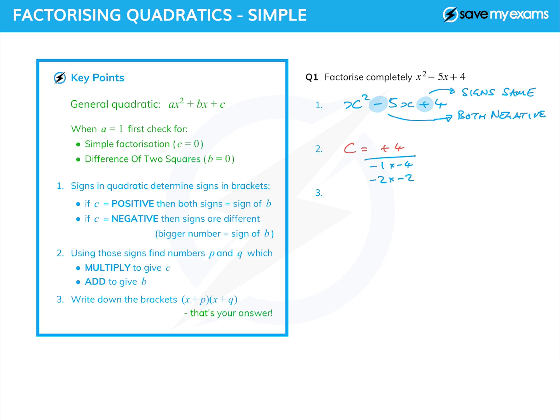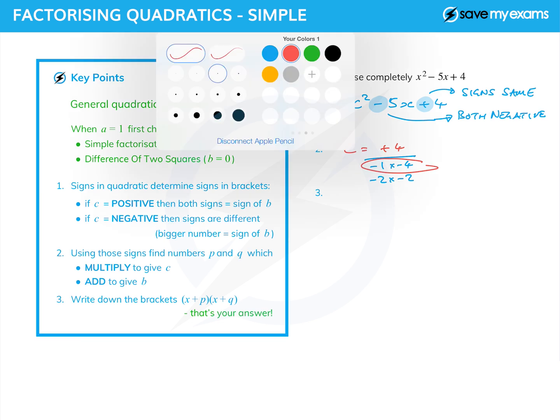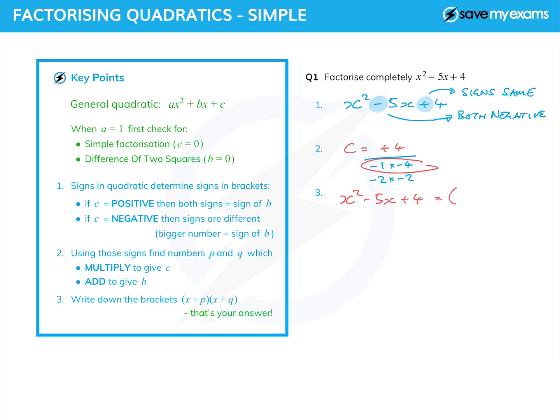We just look to see which add together to give -5, and it is those two (-1 and -4) which add together to give -5. So we can simply write down our answer: x² - 5x + 4 = (x - 1)(x - 4), and that is that.